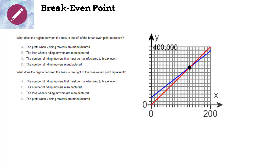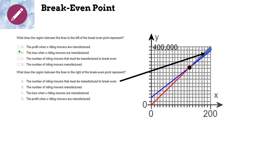What does the region between the lines to the left of the break even point represent? The region to the left of the break even point represents a loss. What does the region between the lines to the right of the break even point represent? The region to the right of the break even point represents a profit.